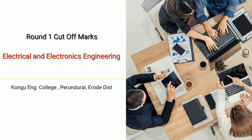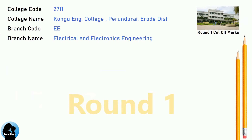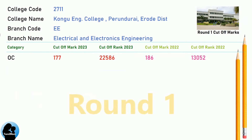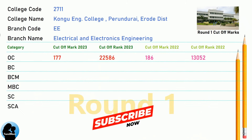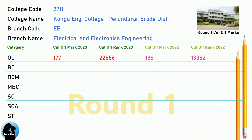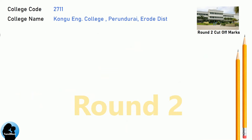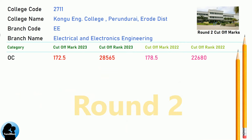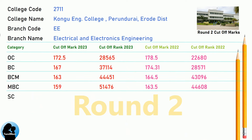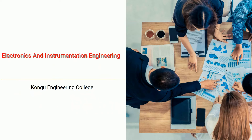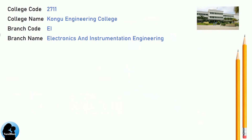BNA Round 1 Cut-Off for Kongu Engineering College in Electrical and Electronics Engineering. BNA 8.5 Reservation Cut-Off for Kongu Engineering College in Electrical and Electronics Engineering. BNA Cut-Off for Kongu Engineering College in Electronics and Instrumentation Engineering.